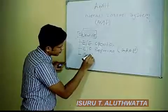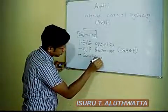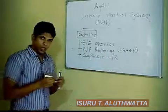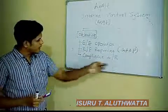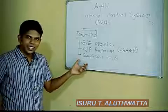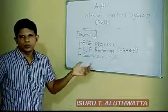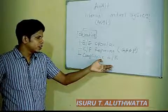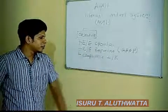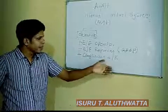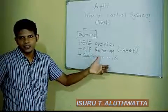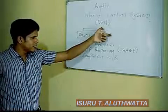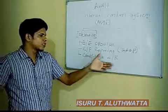The next objective is compliance with laws and regulations. For any given organization, the industry they are operating in has lots of laws and regulations — maybe environmental laws, or if they are operating in a financial industry, there may be bank policies. So when you are designing the internal control system, make sure to ensure compliance with those laws and regulations.